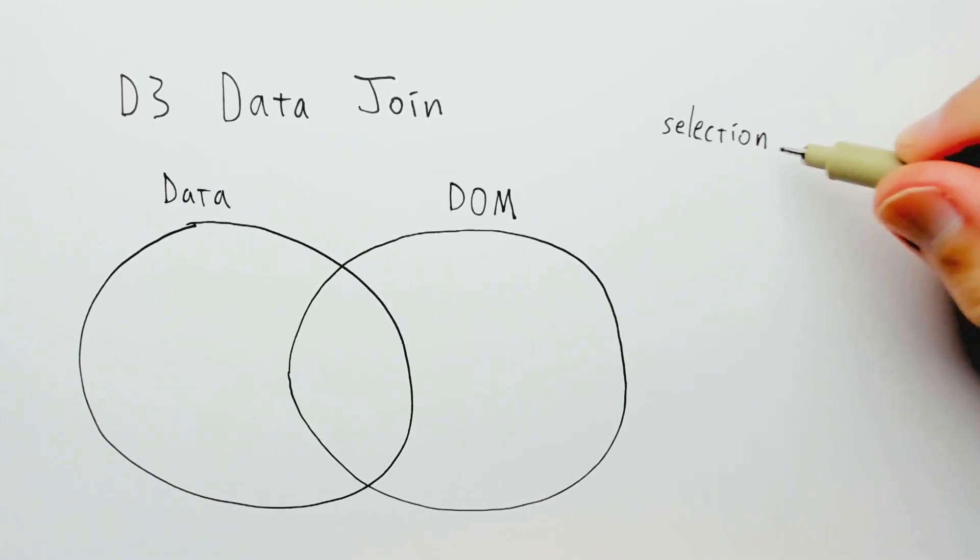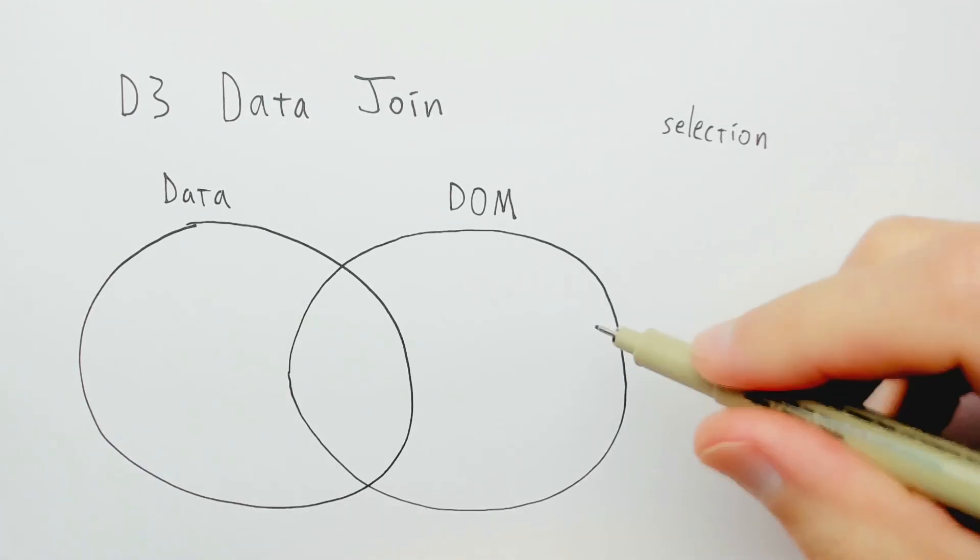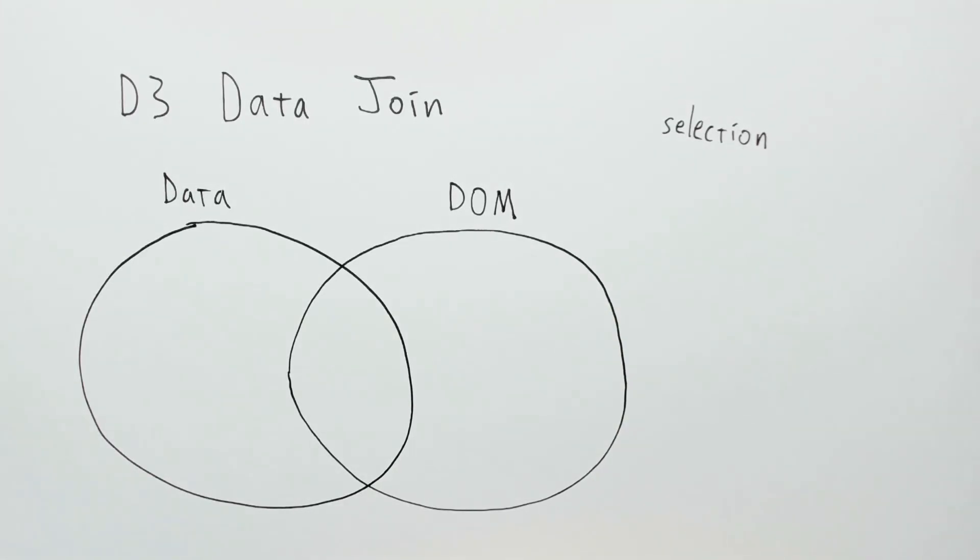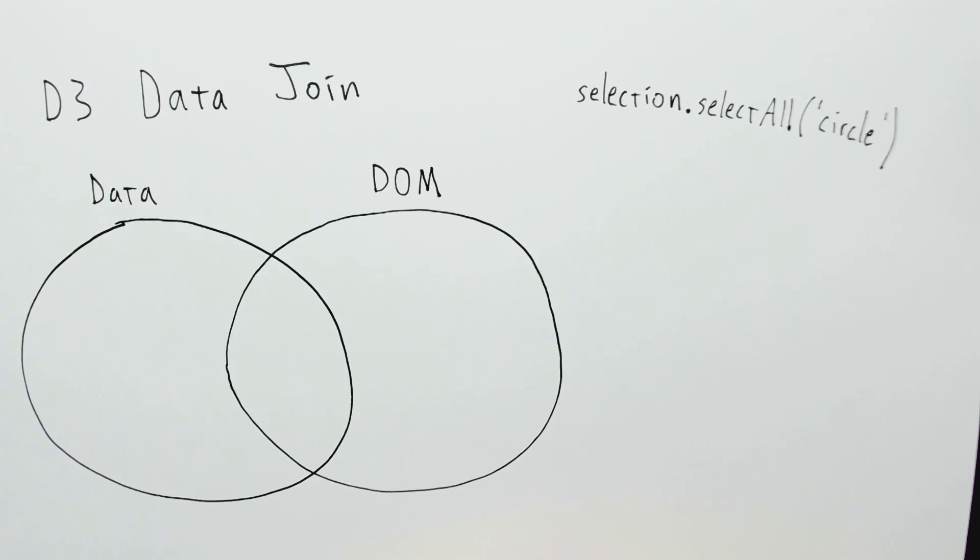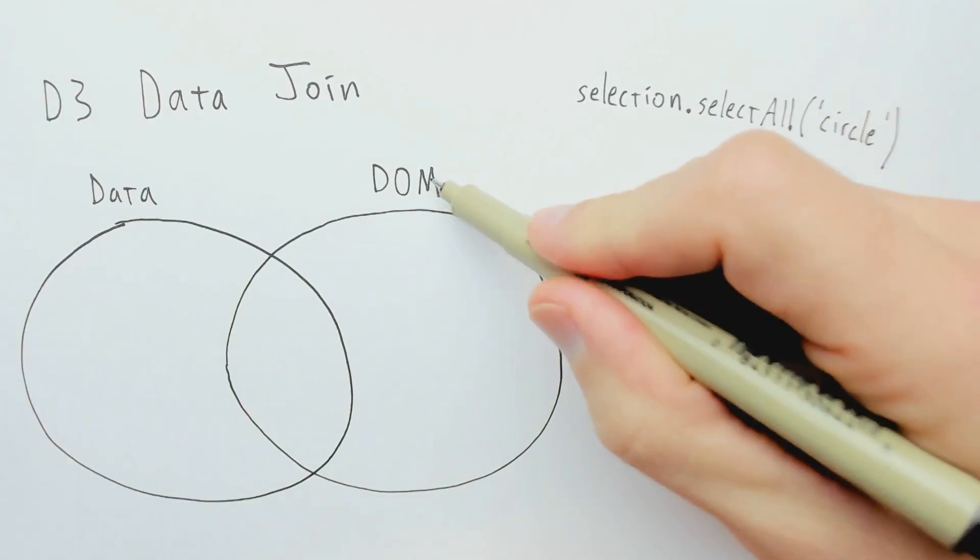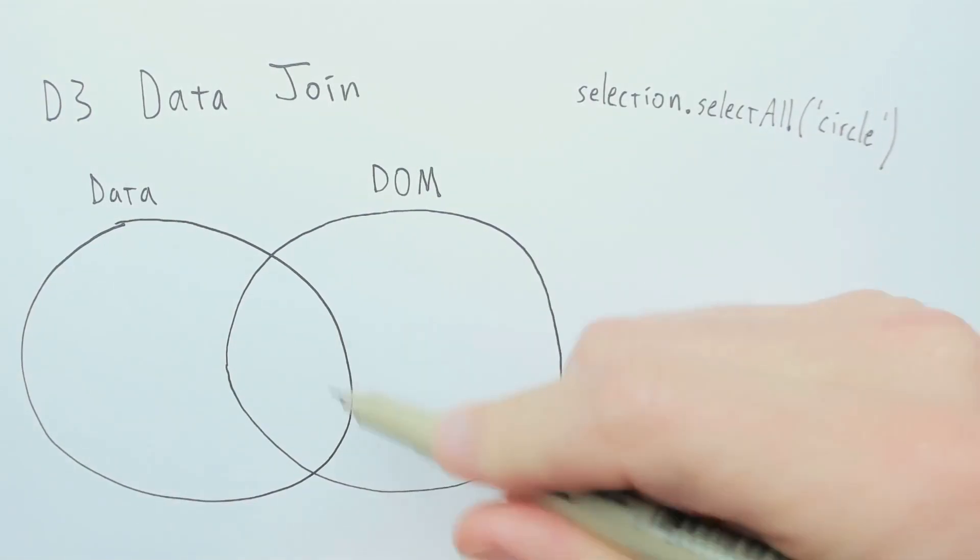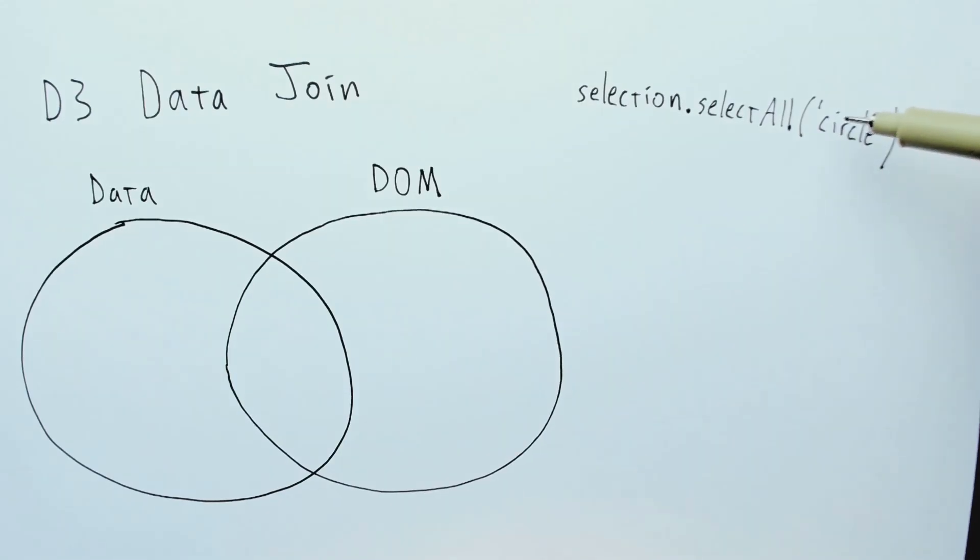Assuming we start with a selection, which is a D3 selection of the parent element of all the DOM elements that we're going to manipulate, and let's say we want to keep a bunch of circles in sync with our data. We start by saying selection.selectAll circle. That gives D3 the information of what the DOM elements are to start with. And the first time this runs, the set will be empty because there are no circles quite yet.